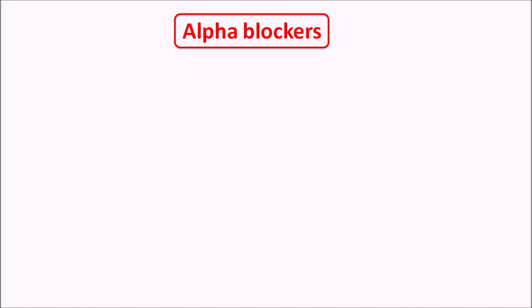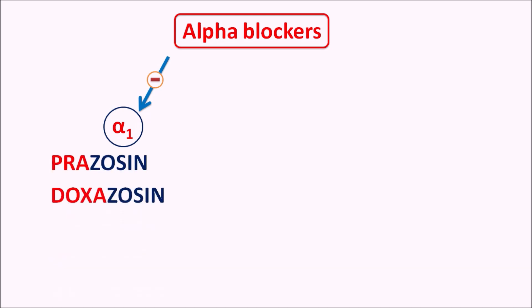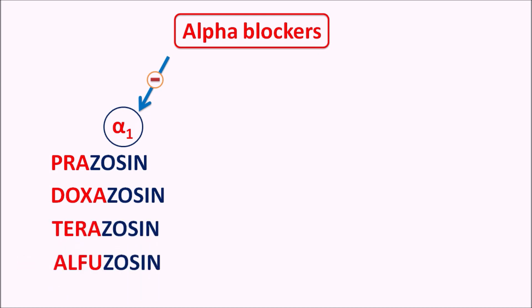On the other hand, selective alpha blockers can block a particular subtype of alpha receptors. For instance, they can be classified as alpha 1 blockers, which end with the suffix '-zosin'. We have drugs like prazosin, doxazosin, terazosin, and similarly alfuzosin — all these are selective alpha 1 blockers.